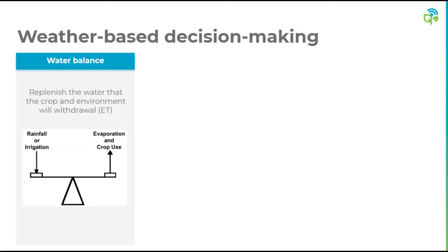When it comes to weather-based decision making, we're really trying to strike a balance between the inputs and outputs of water on the farm. The inputs are precipitation or irrigation water applied, and the outputs would be evapotranspiration and crop use combined, also known as evapotranspiration or ET.